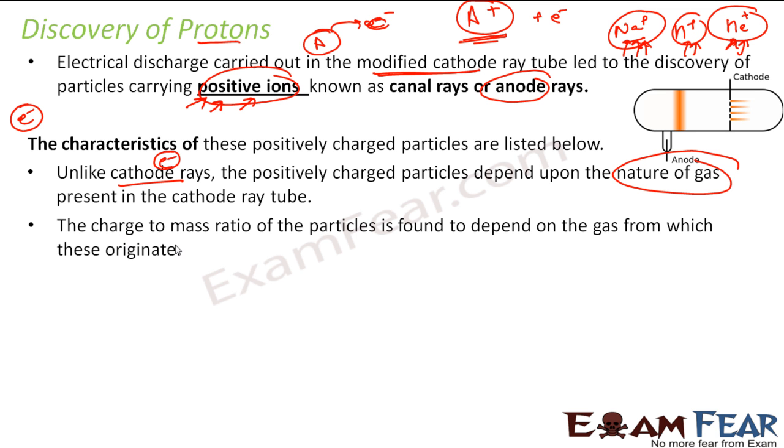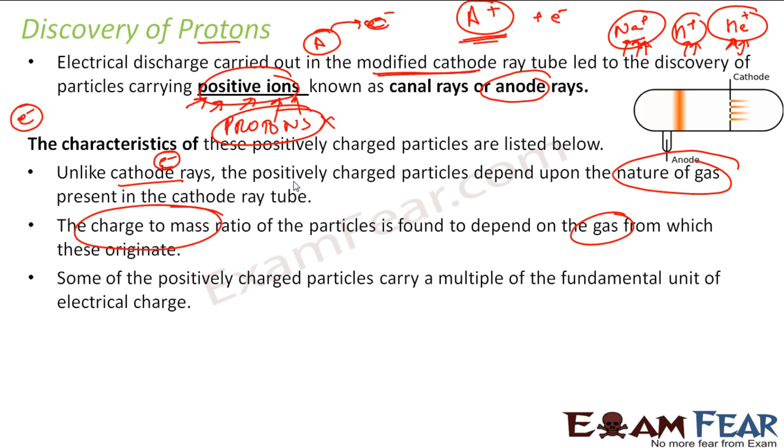By this time they knew how to find charge to mass ratio thanks to J.J. Thomson. They found that the charge to mass ratio also varies depending on the gas. If you see sodium has one charge but the mass is more, hydrogen also has one charge but mass is less, helium has one charge but a little more mass than hydrogen. So charge to mass ratio will vary depending on the gas because we are talking about positive ions here, not protons till now.